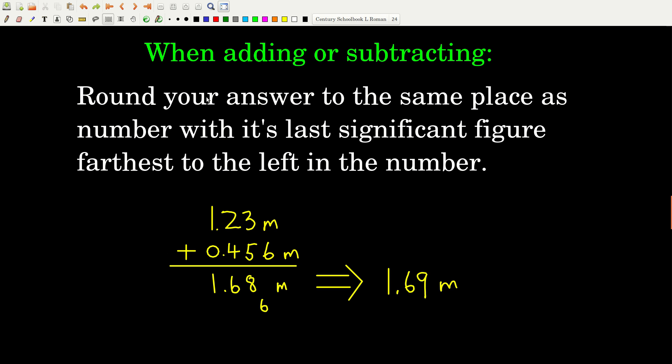Now, here's the rule. When you're adding or subtracting, when you're finished, what you're going to do is you're going to round your answer to the same place as the number that you're adding or subtracting, who has its last significant figure farthest to the left.